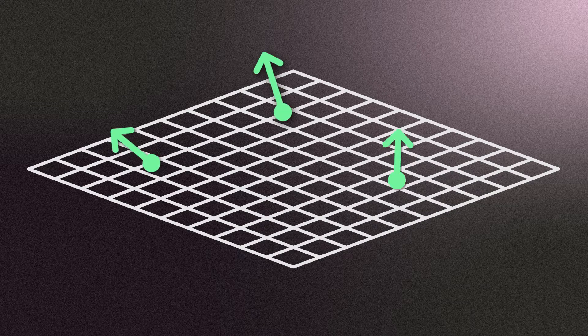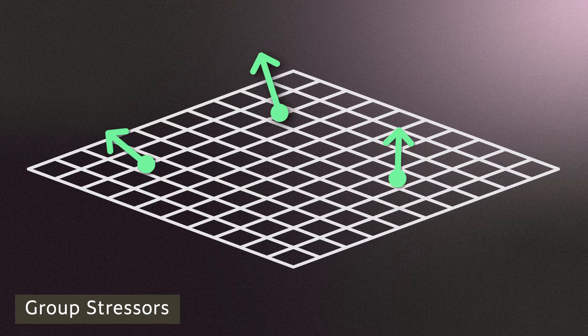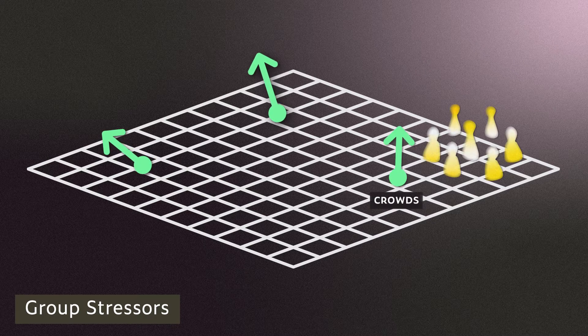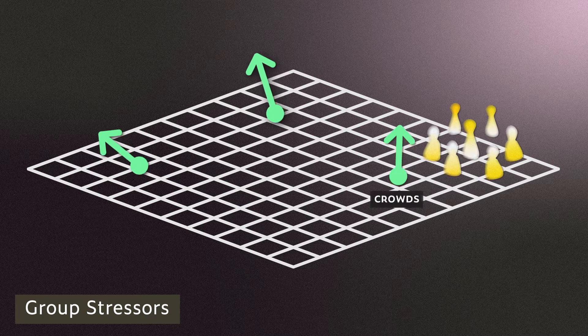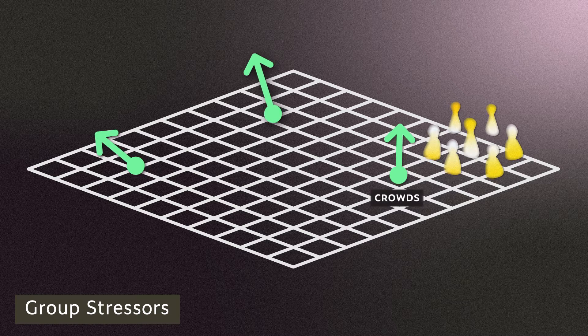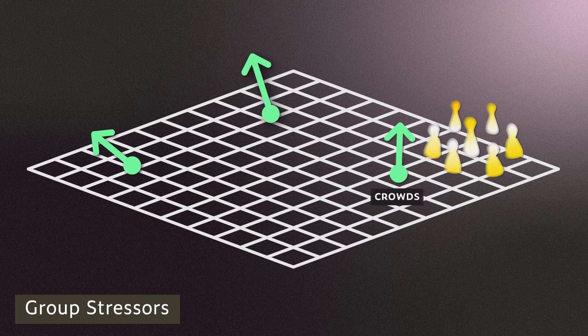As situations intensify, the size of your team may grow, creating group stressors. Crowding is one example which strains your cognitive resources, affects your ability to carry out physical tasks, and leads to increased errors.